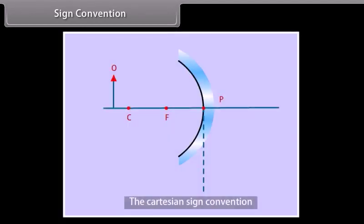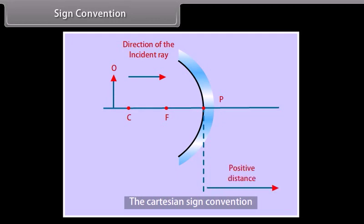Sign convention: Distances measured in the direction of the incident ray are taken to be positive, and those measured in the opposite direction are taken to be negative. Heights measured upwards are taken to be positive, and those measured downwards are taken to be negative.